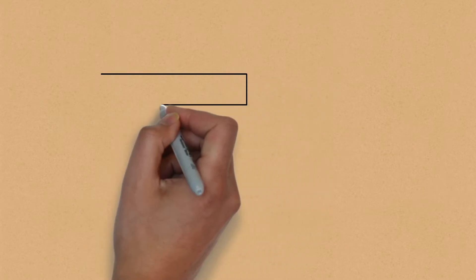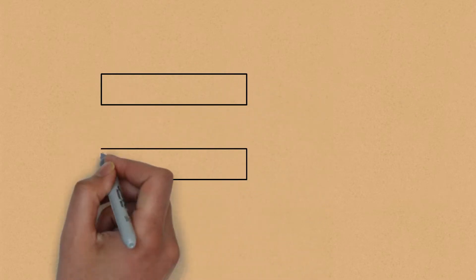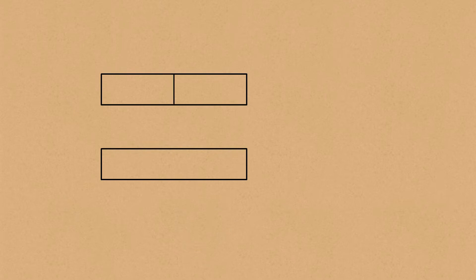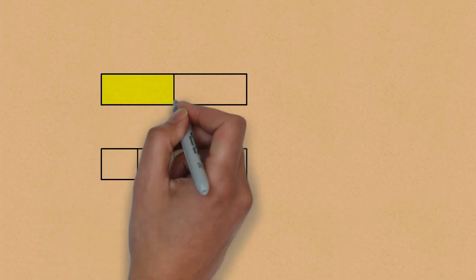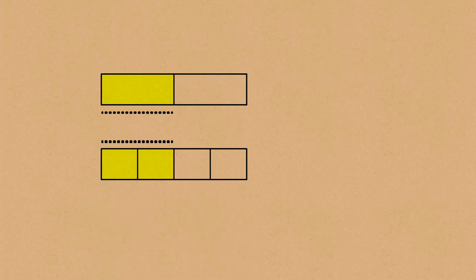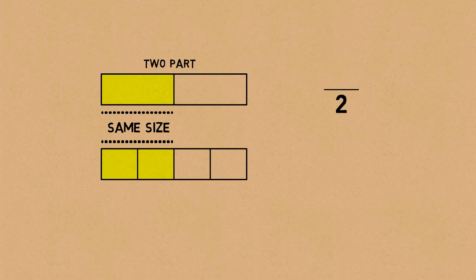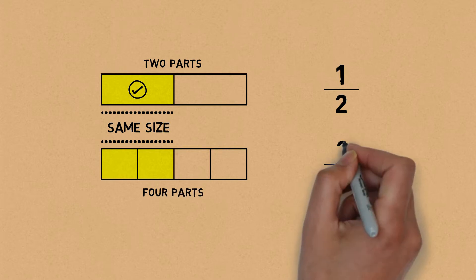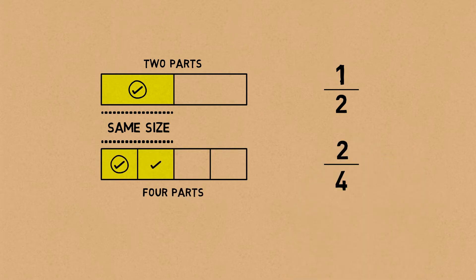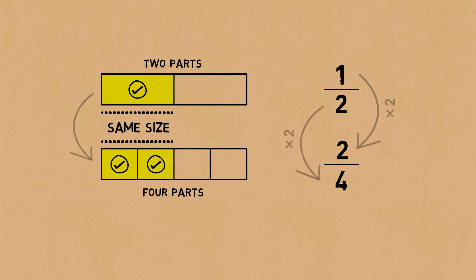Let's take two bar models like we did before. I'm going to split one into two parts and the other into four parts, then shade the same size in both. The denominator of the first is two and the numerator is one, since one half is shaded. For the second, the denominator is four and the numerator is two since two parts are shaded. Do you see one part has been split up into two here? That means the numerator has been multiplied by two, and when that happens, the denominator will also be multiplied by the same number.